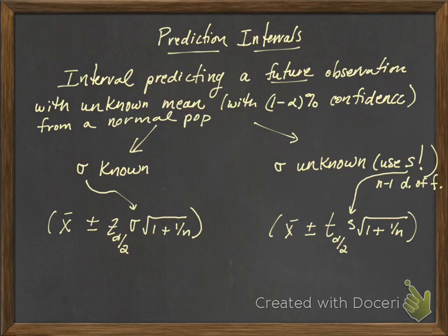Okay, as promised, here's a quick video showing some examples of prediction intervals. We're creating an interval that's going to predict a future observation from a population with an unknown mean that's approximately normal, with a 1 minus alpha percent level of confidence. You're given these formulas on the formula sheet.